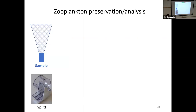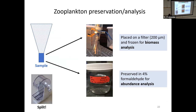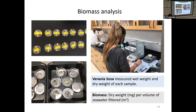Once samples are collected, I drain out the plankton net and collect them from the cod end — that little cup at the bottom. Each sample was split with a Folsom splitter. Half was used for biomass analysis — put on a filter and frozen for later. The other half was preserved in formaldehyde to look at the abundance of different animal groups within the sample. The biomass analysis is done and I have data to show you; the abundance analysis is in progress. Biomass is reported as milligrams of dry weight per meters cubed of seawater filtered.